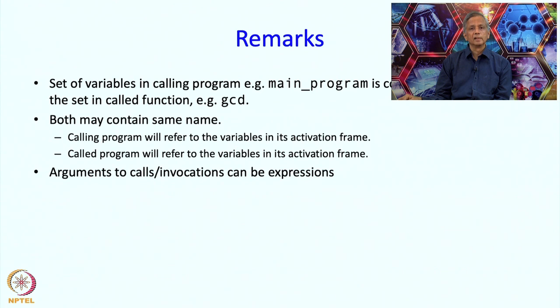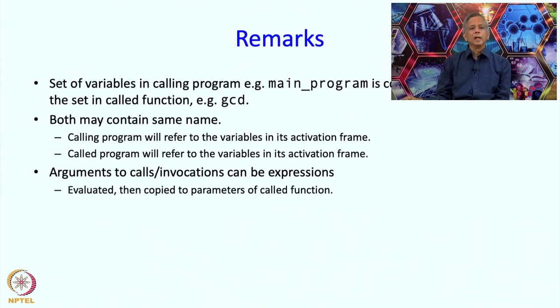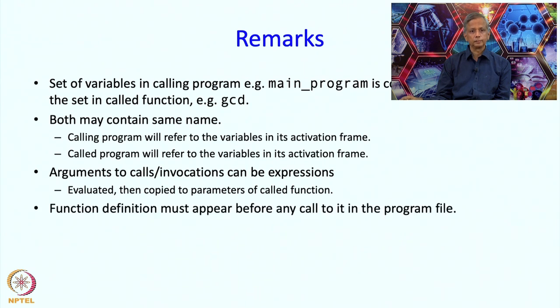When passing the values of arguments, you can pass numbers directly, names of variables, or even an expression — which is first evaluated and then copied to the parameters of the called function. An important point in C++ is that if you are referring to a name, that name must be defined earlier. In the main program we refer to gcd, so gcd must be defined before it is used. The C++ compiler expects that gcd be defined before it is actually called.